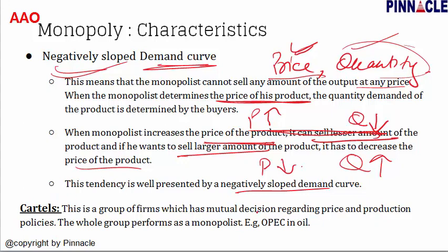A cartel is a group of firms that makes mutual decisions regarding price and production policies. When many firms are in a market, they form cartels to decide price or production policies, and the whole group performs as a monopolist. OPEC is an example — in West Asia, many oil producing countries collectively decide price and production quotas, acting as a monopolist. OPEC stands for Oil Producing and Exporting Countries.